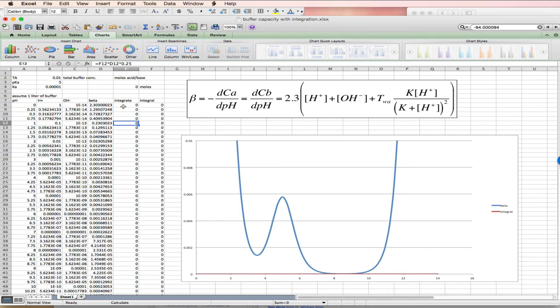Now this integrate column is going to be the simple numerical integration over a quarter pH unit interval. So it's the amount of acid I would need to change the pH by a quarter pH or the amount of base that I need to change the pH by a quarter pH unit. And so let's assume we're going to start at pH 5 and I want to increase the pH.